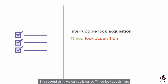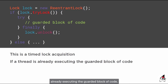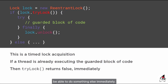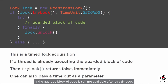The second feature is timed lock acquisition. Instead of calling the lock method, we can call tryLock. If a thread is already executing the guarded block of code, tryLock returns false immediately — so instead of being blocked, our thread can do something else. We can also pass a timeout: for example, our thread will wait for one second, and if the guarded block is still unavailable after this timeout, it executes the else block of code.